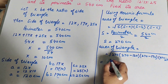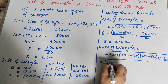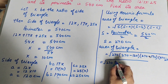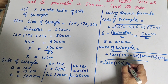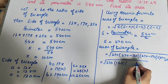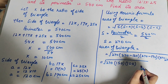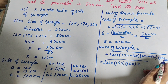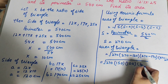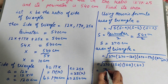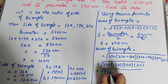So the area equals square root of 270 times 150 times 100 times 20.